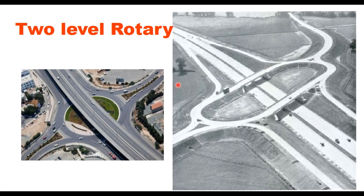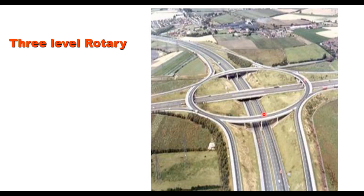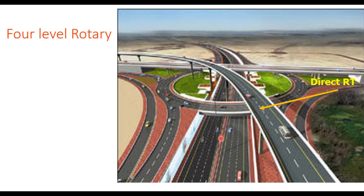A variation has the roundabout at ground level with the expressway at the second level. A three-level roundabout keeps traffic on both roads uninterrupted and grade-separated, with the roundabout at the third level used for both right and left turning movements. In a four-level roundabout, the expressway is at ground level, the roundabout at the second level, an east-west expressway at the third level, and the direct right turn is at the fourth level; all remaining right turns use the roundabout at the second level.